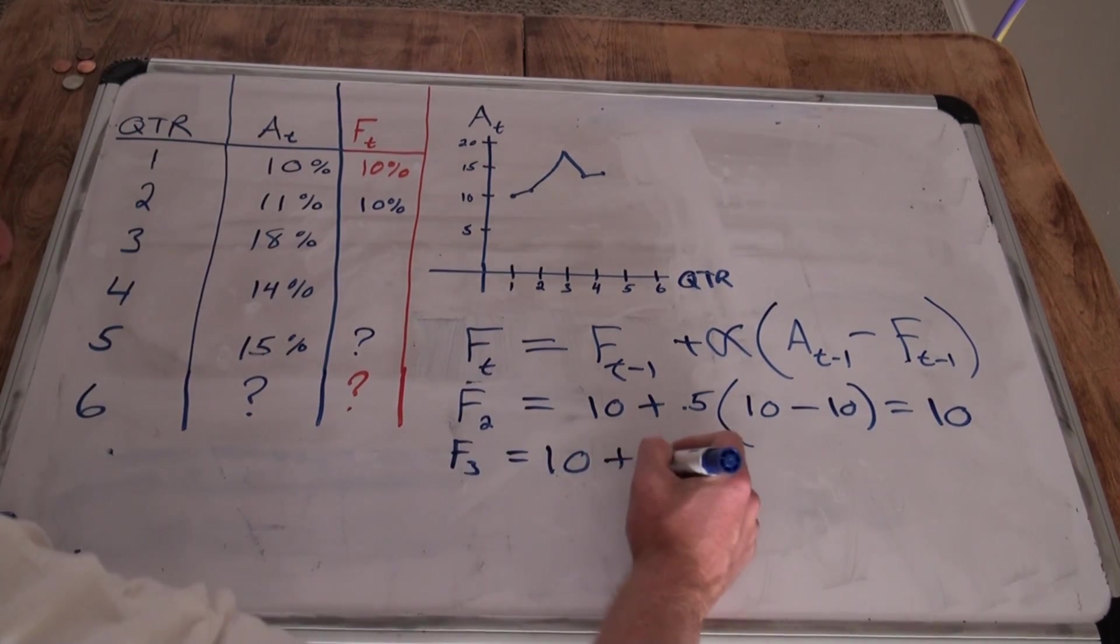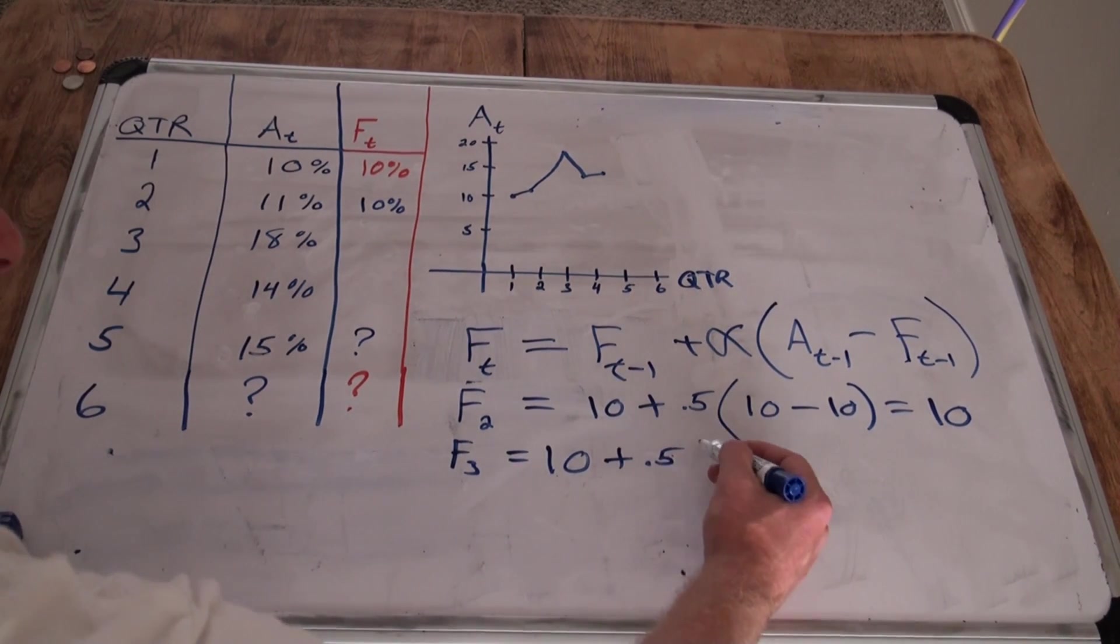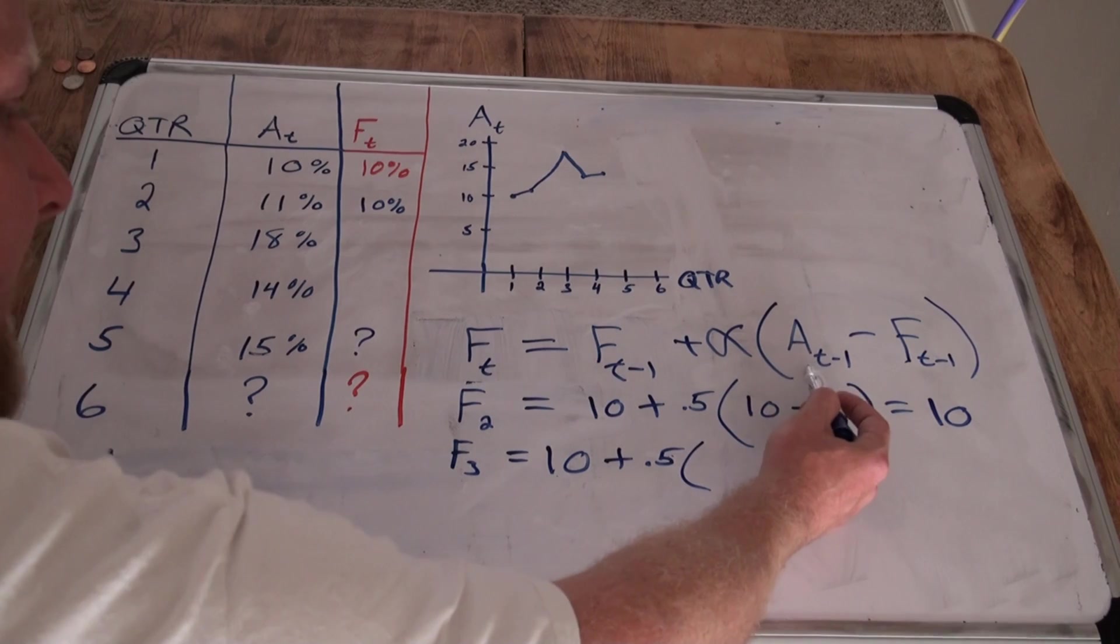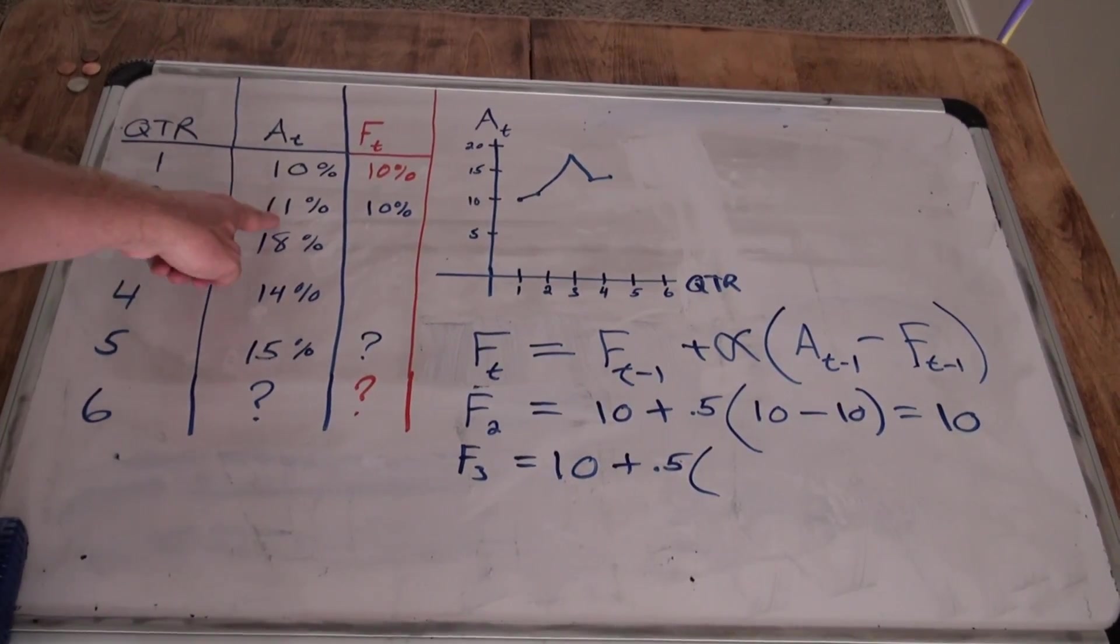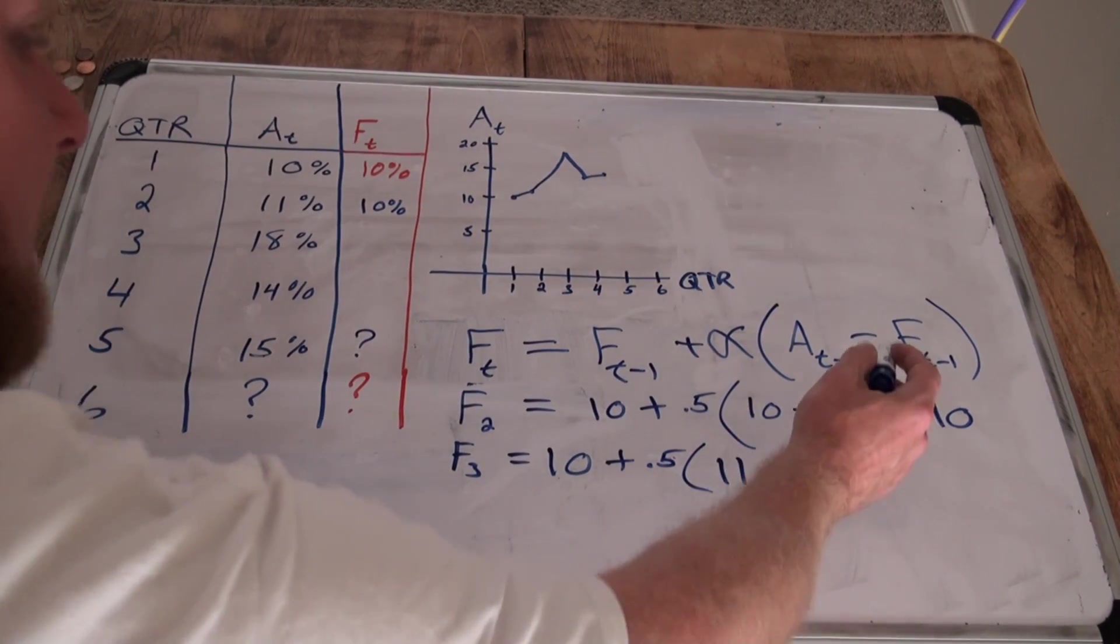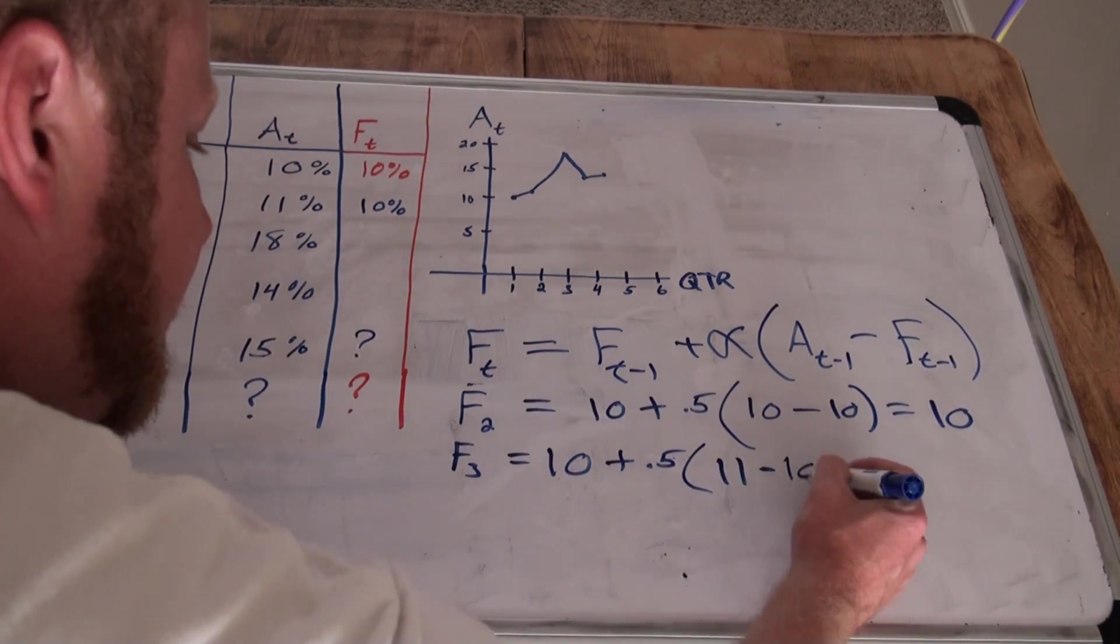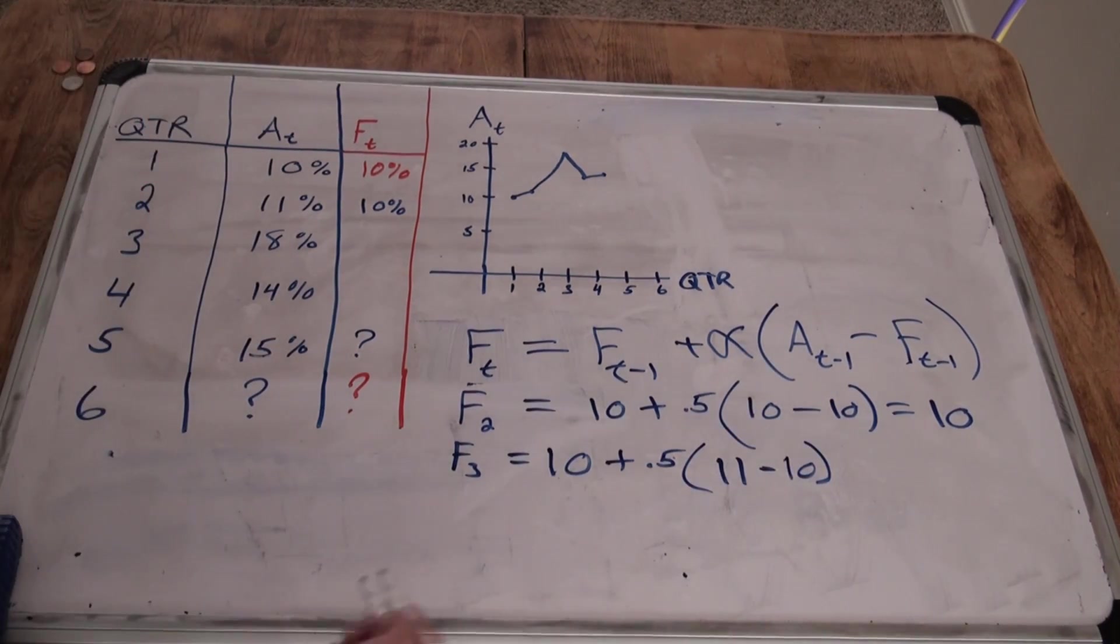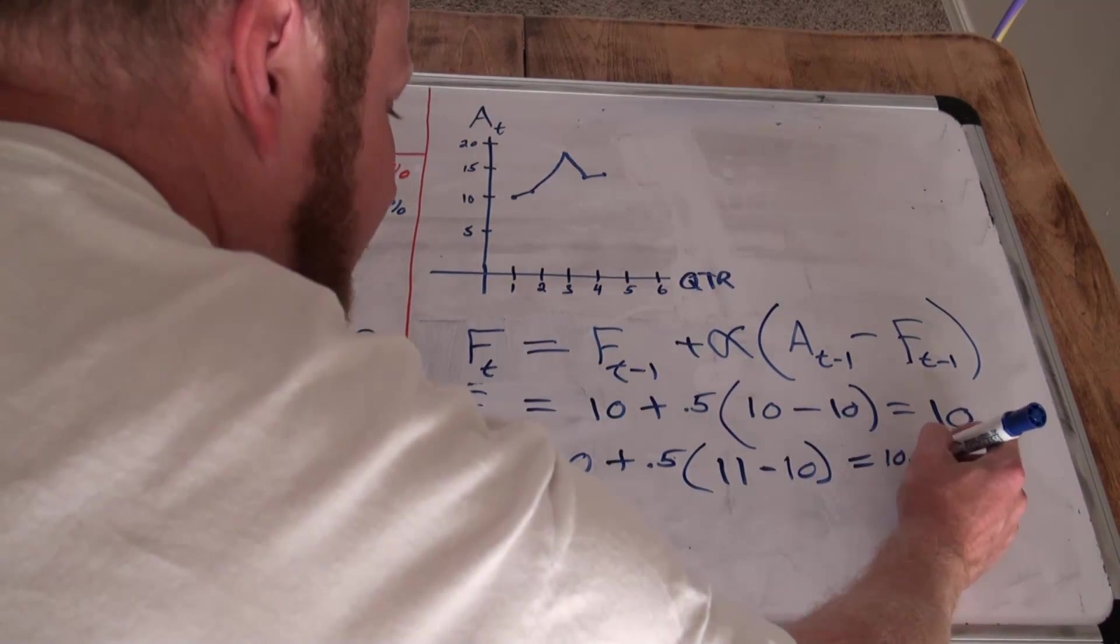Plus our alpha constant, smoothing constant, times actual three minus one is two. So, the actual second quarter was 11%. So, we've got 11% minus forecasted t minus one, which was 10%. 11 minus 10 is one, times point five is point five, plus 10 is 10.5.